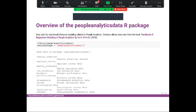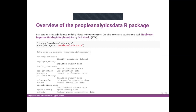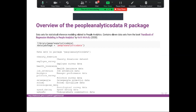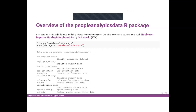Now let's get an overview of the people analytics data R package. The dataset used in this tutorial comes from this amazing package, which contains 11 datasets from the book 'Handbook of Regression Modeling in People Analytics' by Keith McNulty. To access the data, you call the library using library(peopleanalyticsdata), and then the command data(package = 'peopleanalyticsdata') will show you all the datasets in this package.